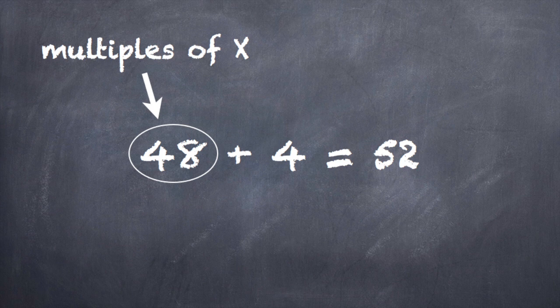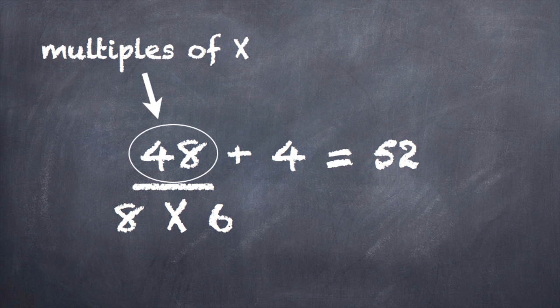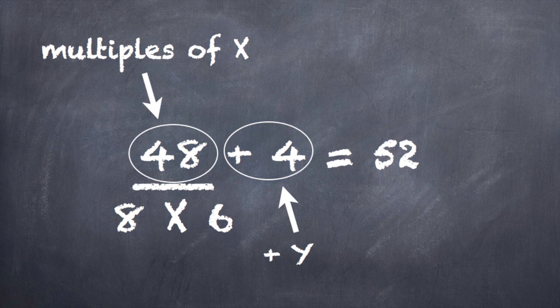So again, our multiples are of X. In this case, it's going to be six. The 48 is eight multiples of six. And then our Y is plus four. So we're adding on those four stitches to make the pattern symmetrical. And our total cast on stitches in this case is 52.